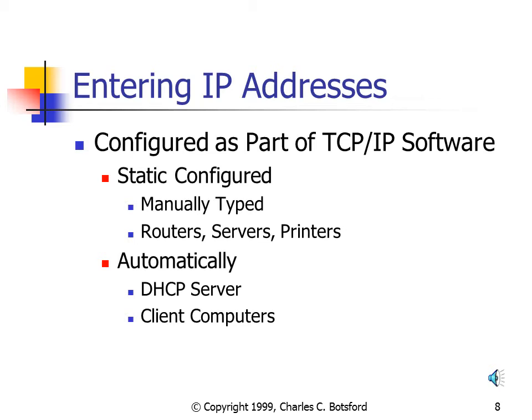Another way to configure IP Addresses is with a DHCP server. The DHCP server will automatically hand out IP Addresses to different TCP/IP devices, which is perfect for client computers. With DHCP there are situations where IP Addresses could change from session to session — that's fine with client computers, but we don't want that with routers, printers, servers, or key networking devices. So routers and servers are statically configured, while client computers will use DHCP, which makes it easier to address networks and cuts down on errors.